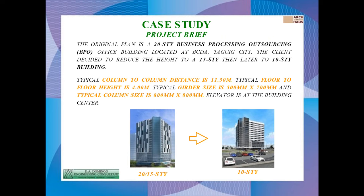For the case study, we will present this project brief. It is a 10-story business processing outsourcing office located at BGC, Taguig City. Initially it was a 15-story building, then the client decided to make it a 10-story building. The typical column-to-column distance is 11.5 meters, typical floor-to-floor height is 4 meters, typical girder size is 500 by 700, and typical column size is 800 by 800 millimeters. The elevator is at the building center.